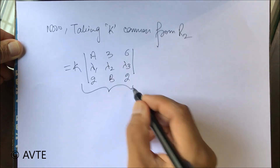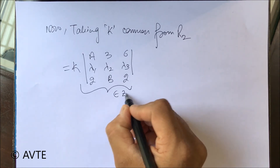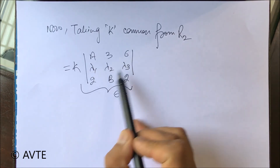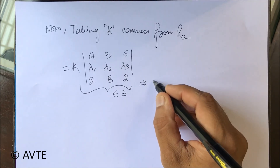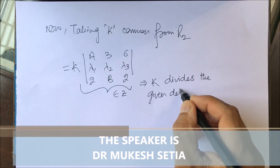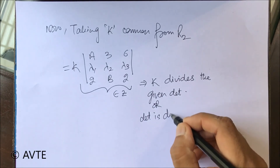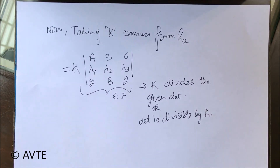Now generally we would solve the determinant fully, but this time we're not bothered — because each entry in the determinant is an integer, the determinant value will clearly be an integer. This shows that k divides the given determinant, i.e., the determinant is divisible by k. Initially the question looked difficult, but by applying the face value and place value of the numbers, we reached the answer easily. Thank you very much.